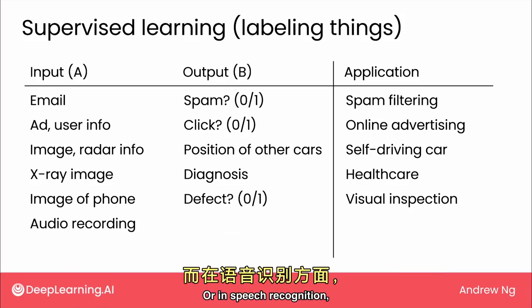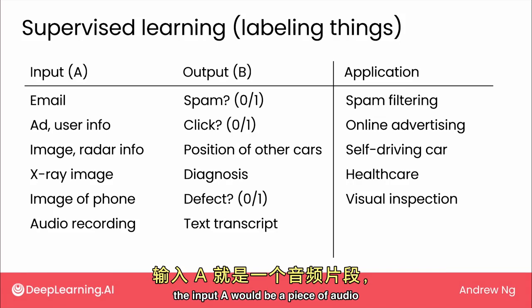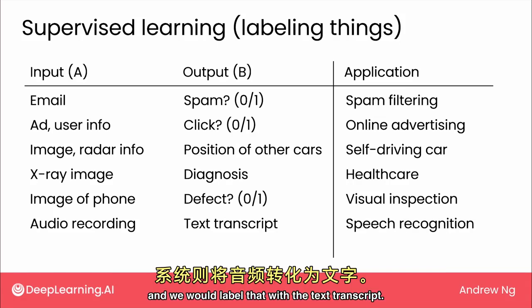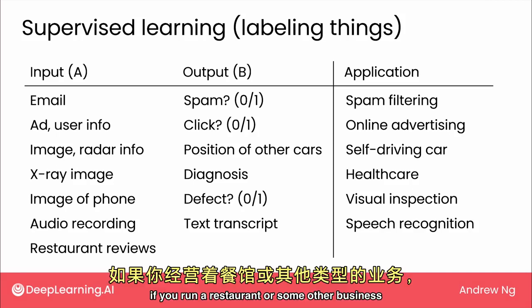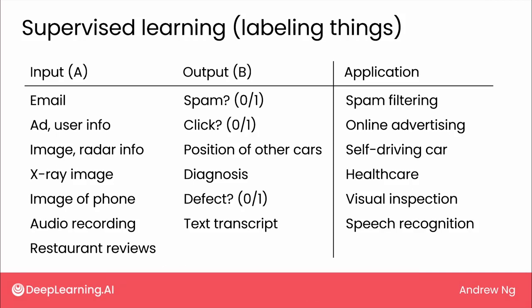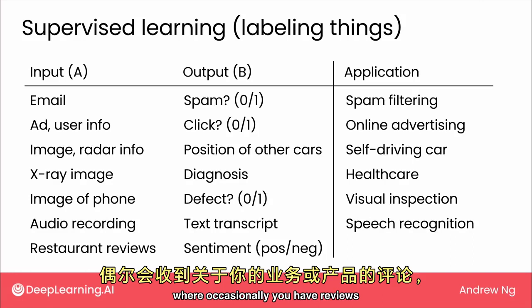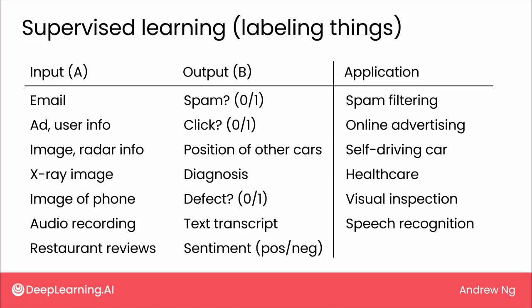Or in speech recognition, the input A would be a piece of audio and we would label that with a text transcript. Or as a final example, if you run a restaurant or some other business where occasionally you have reviews written about your business or your products,